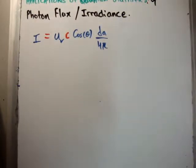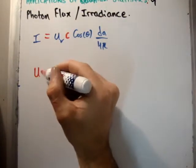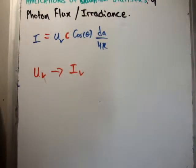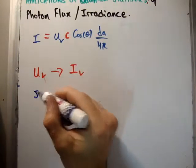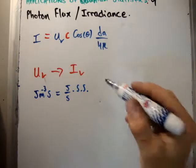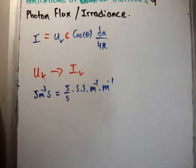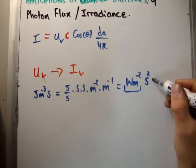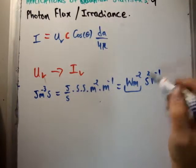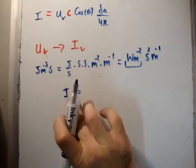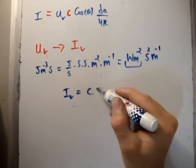You might wonder why the speed of light — surely that makes no sense? Well, think about the units. We have joules per meter cubed per hertz for energy density per unit frequency interval. We want watts per meter squared per hertz for irradiance per unit frequency interval. After unit manipulation, this works out correctly. So I_ν, the irradiance per unit frequency interval, is equal to c times u_ν, the energy density per unit frequency interval. This is confirmed by dimensional analysis.